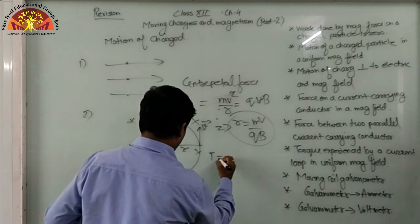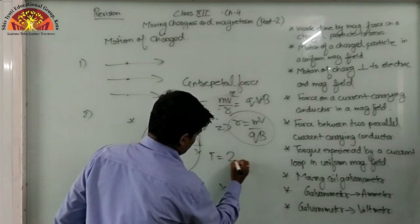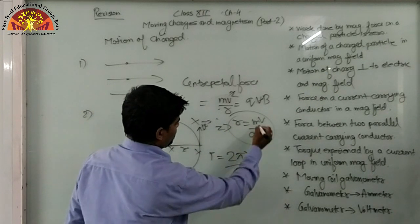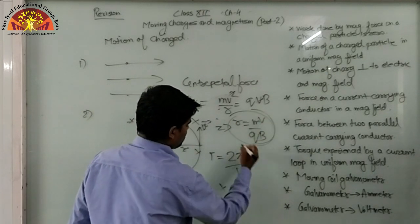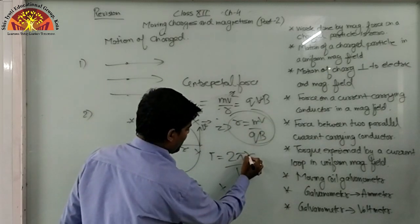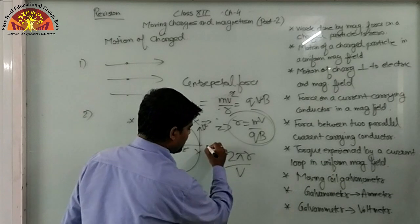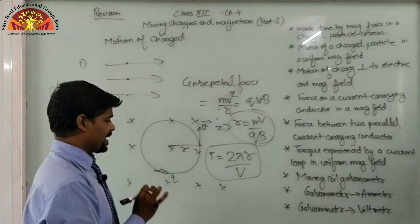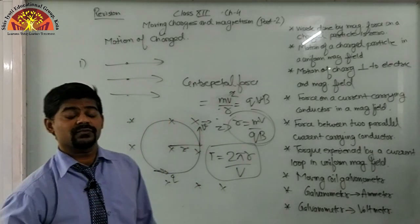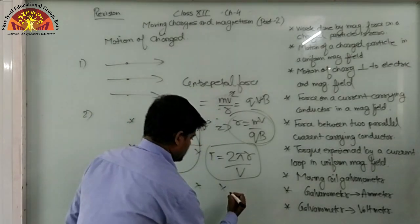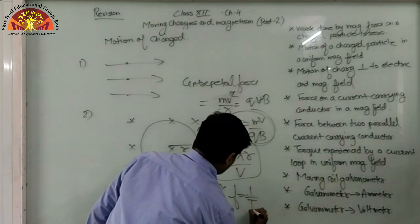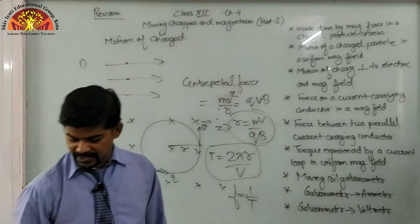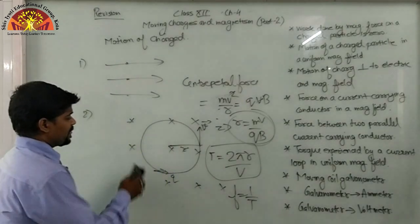If we want to find the time period, the formula is T = 2πr/v. We just take the value of r from the radius formula and substitute it here. You get the formula for time period in this magnetic field. If you want to find frequency, frequency equals 1/T — take the reciprocal of the time period to get the frequency.